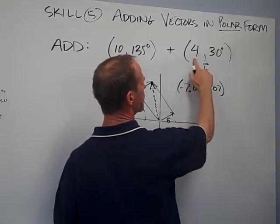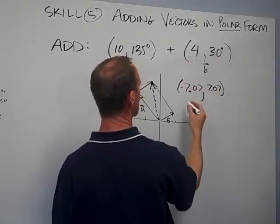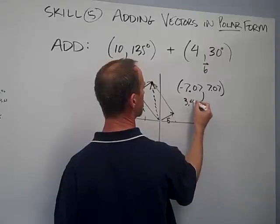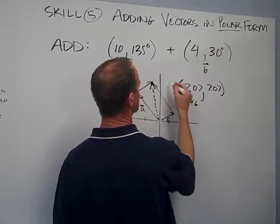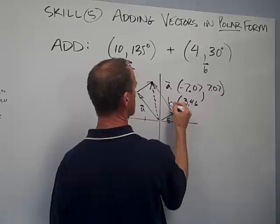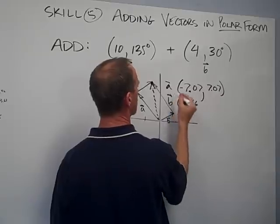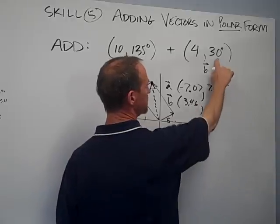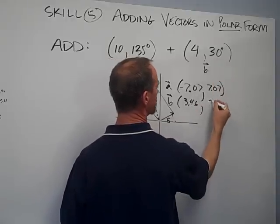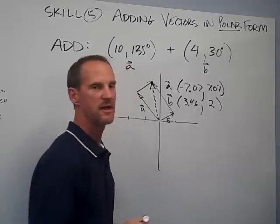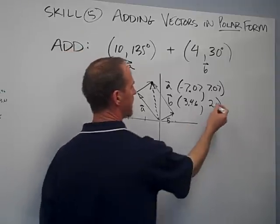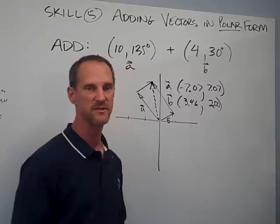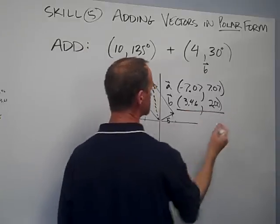For Vector B, 4 times the cosine of 30 gives about 3.46. And then 4 times the sine of 30 is going to be exactly 2.00. I can add two decimal places to be consistent, but it's exactly 2.